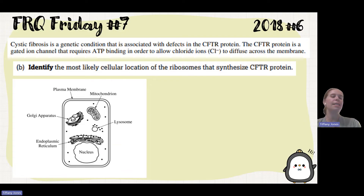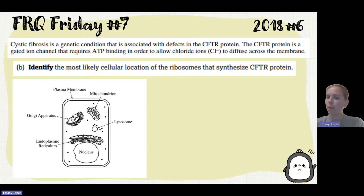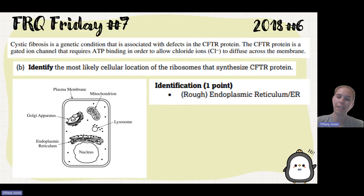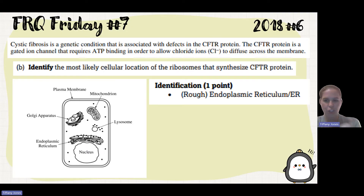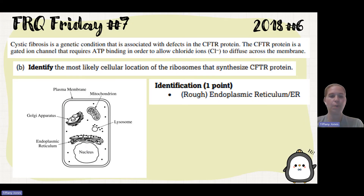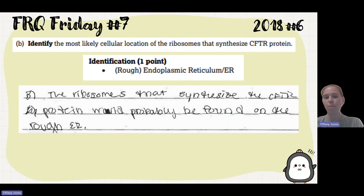The second question says: identify the most likely cellular location of the ribosomes that synthesize the CFTR protein. We know ribosomes synthesize proteins, and since we're synthesizing a membrane protein, the place where we see ribosomes on a membrane would be the endoplasmic reticulum. I always tell students to write a complete sentence. The student said ribosomes synthesizing the CFTR protein would probably be found on the rough ER — they got their point.